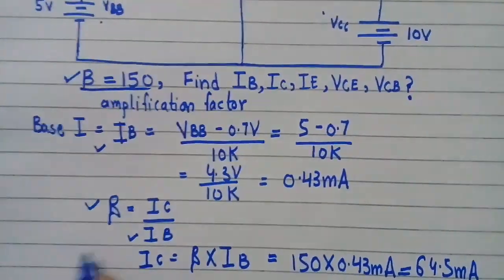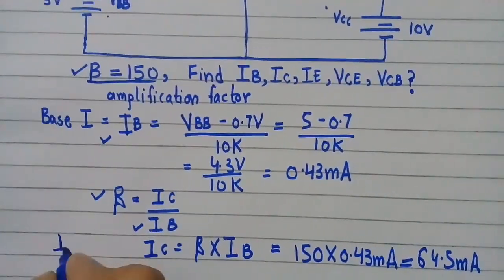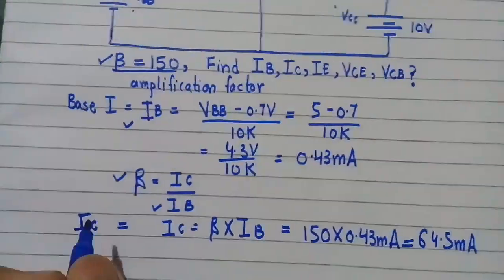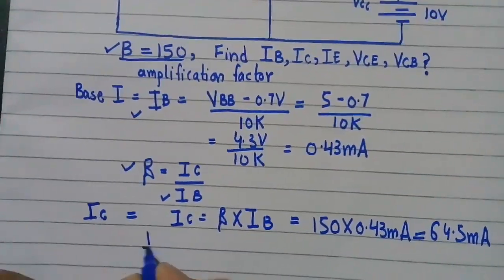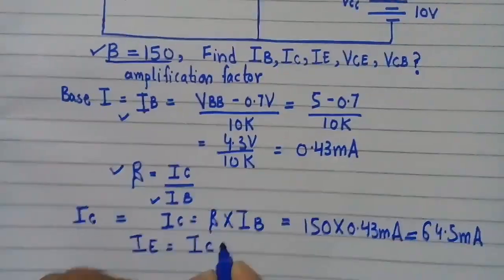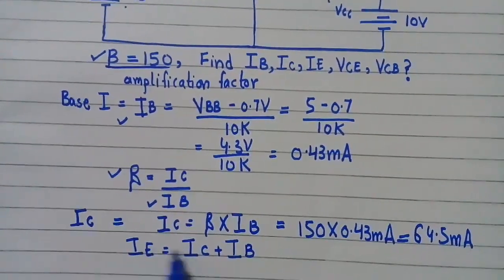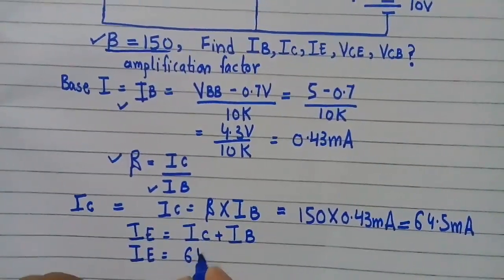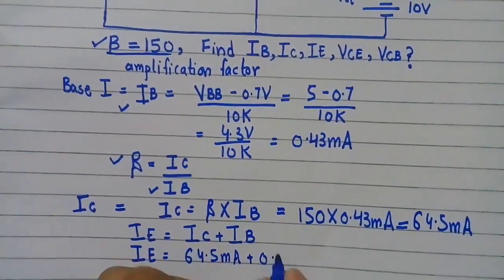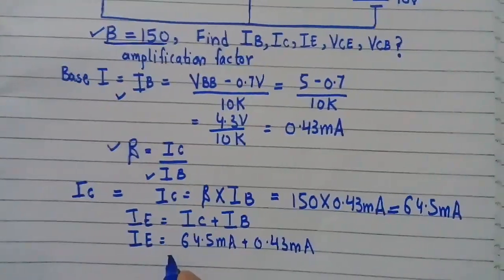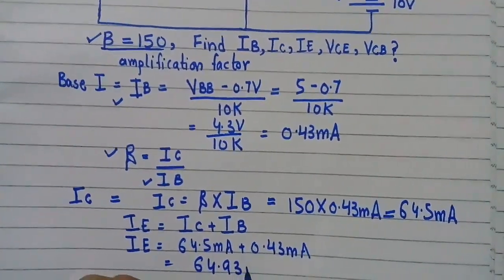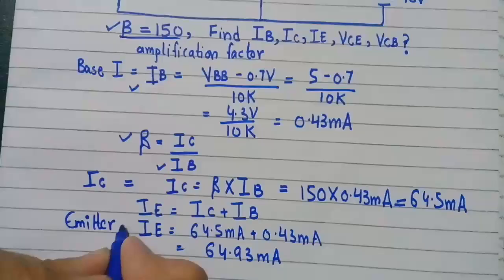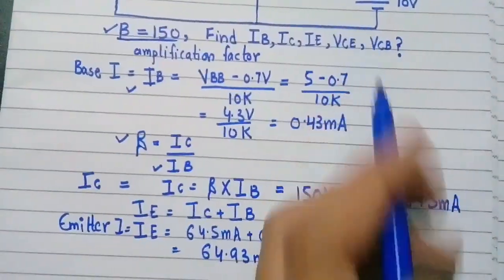Ic = 150 × 0.43 mA = 64.5 mA. This is the collector current. Now we have to find the emitter current. As we already know, Ie = Ic + Ib. So Ie = 64.5 mA + 0.43 mA = 64.93 mA. This is the emitter current.